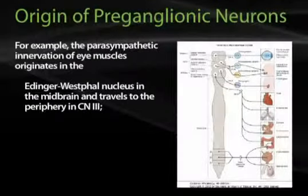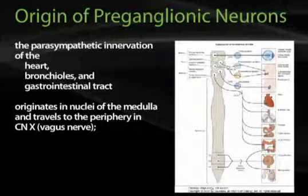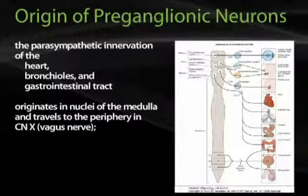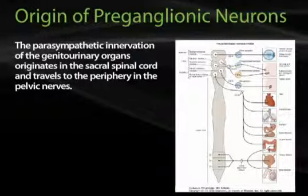For example, parasympathetic innervation of the eye originates in the Edinger-Westphal nucleus of the midbrain and travels to the periphery in cranial nerve 3. The parasympathetic innervation of the heart, bronchioles, and gastrointestinal tract originates in nuclei of the medulla and travels to the periphery via cranial nerve 10, the vagus nerve. The parasympathetic innervation of the genitourinary organs originates in the sacral cord and travels to the periphery in the pelvic nerves.